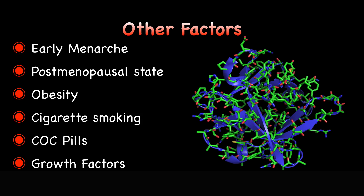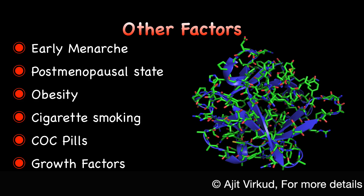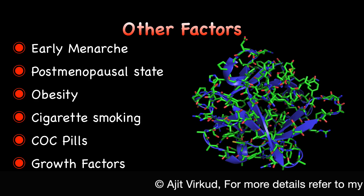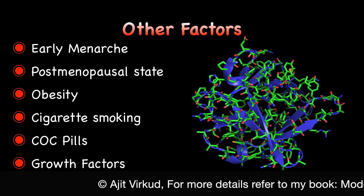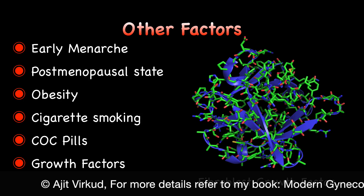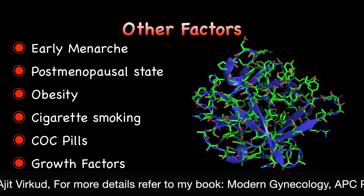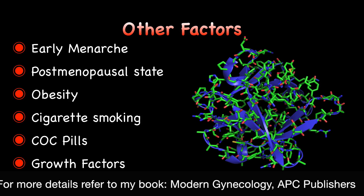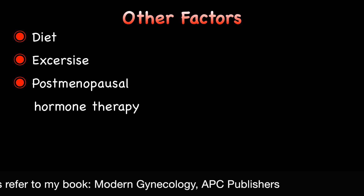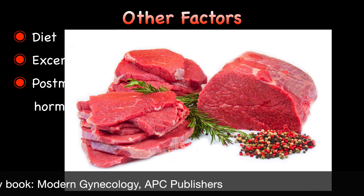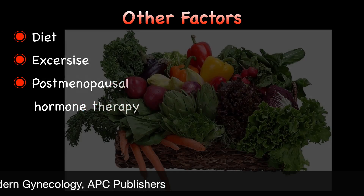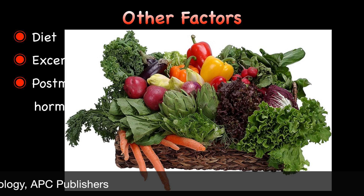More recently, growth factors have been shown to mediate the growth-promoting effects of estrogen and to play an important role in the development of fibroids. Potentially important factors in fibroid growth include transforming growth factor beta, basic fibroblast growth factor, epidermal growth factor, insulin-like growth factor, and platelet-derived growth factor. A diet rich in red meat and ham increases the incidence of fibroids, while a diet rich in green vegetables decreases this risk, though these findings are difficult to interpret because calorie and fat intake were not measured.